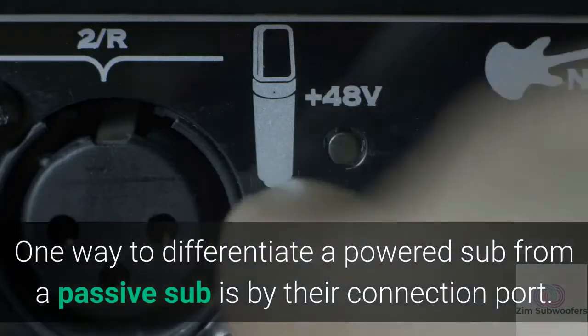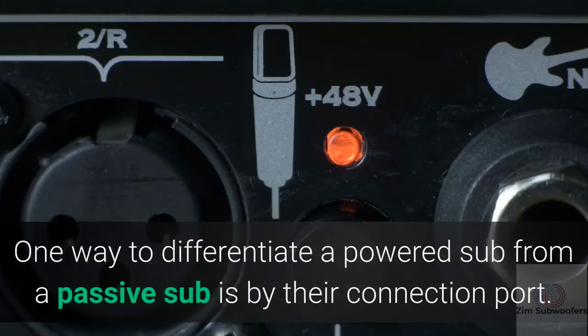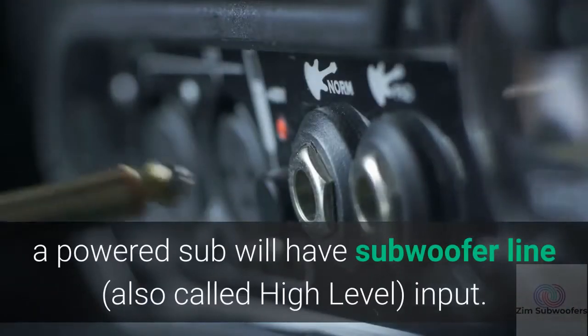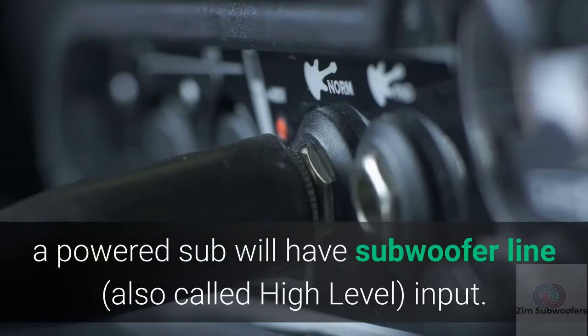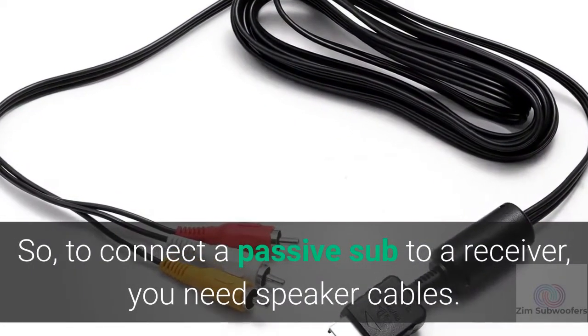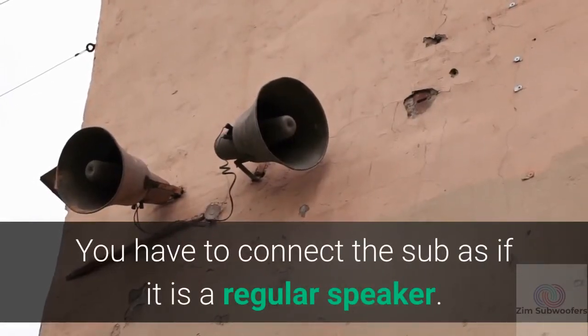One way to differentiate a powered sub from a passive sub is by their connection port. While a passive sub comes with just the speaker connection jack, a powered sub will have subwoofer line, also called high level input. So, to connect a passive sub to a receiver, you need speaker cables. You have to connect the sub as if it is a regular speaker.